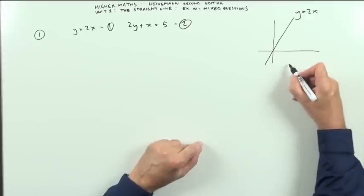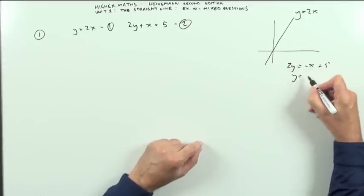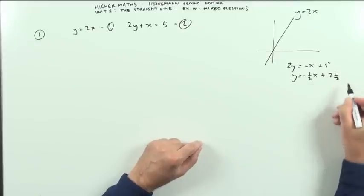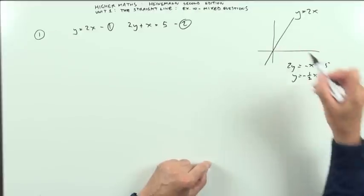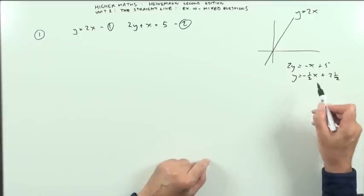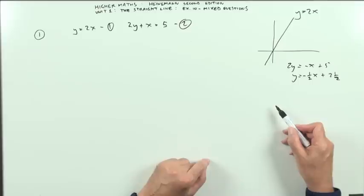2y plus x equals 5. Rearrange that. 2y would be negative x plus 5. So y would be negative one half x plus 2 and a half. That line would start at 2 and a half and drop down a half. A gradient of negative one half means it drops down a half for every one along. Or it drops down 1 for every two along. The same thing.